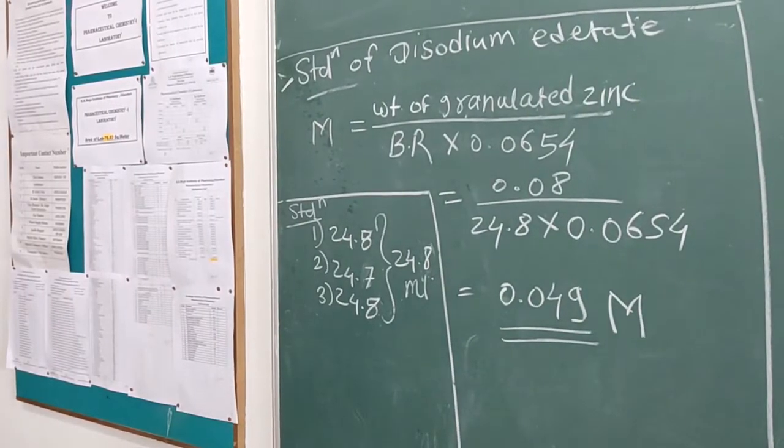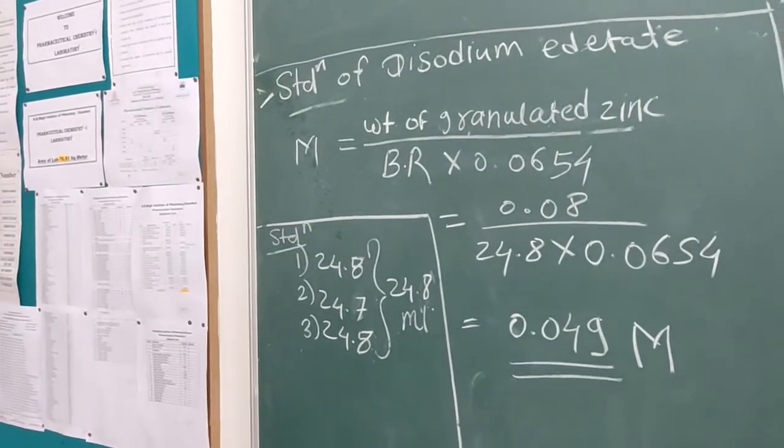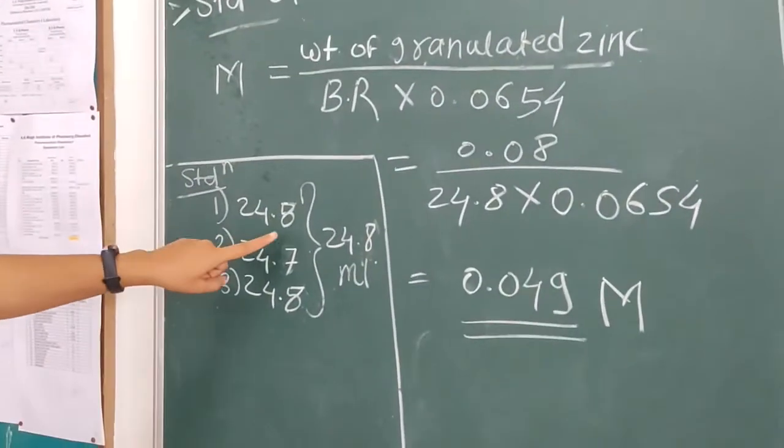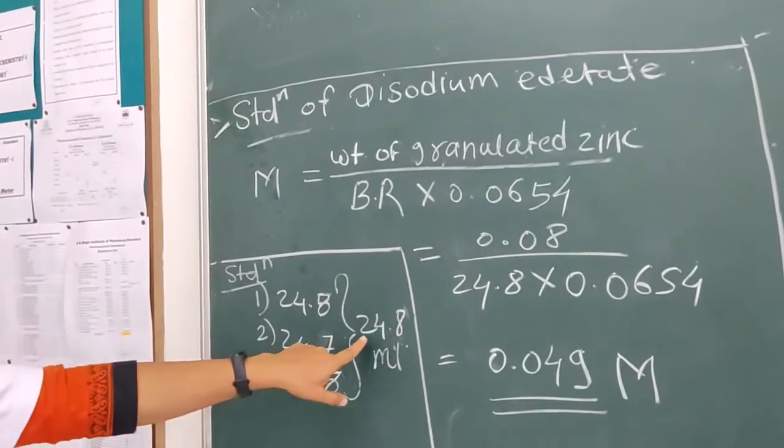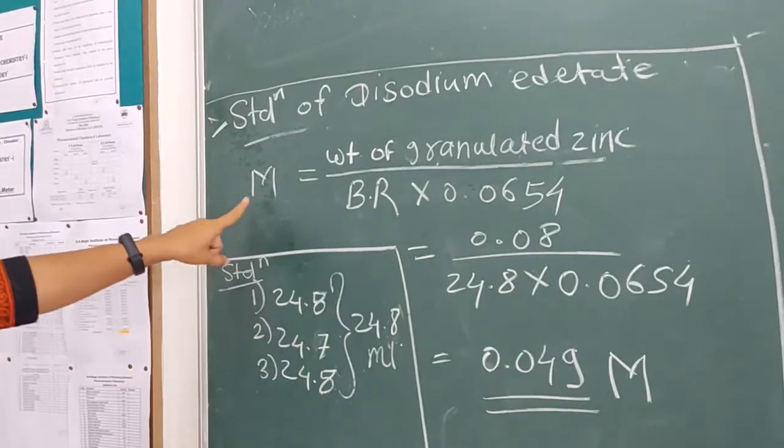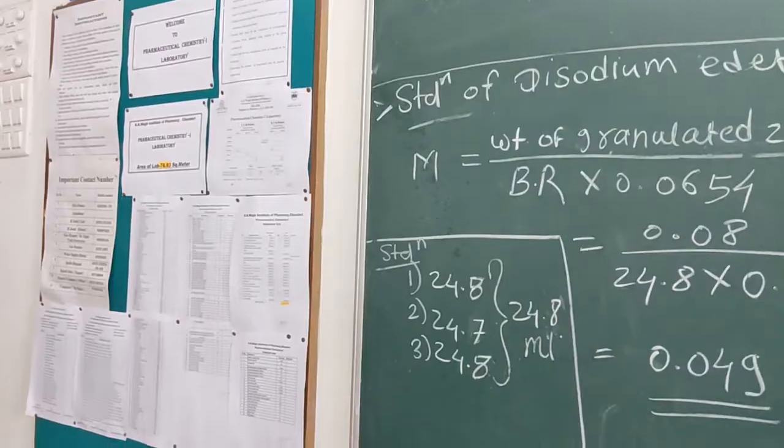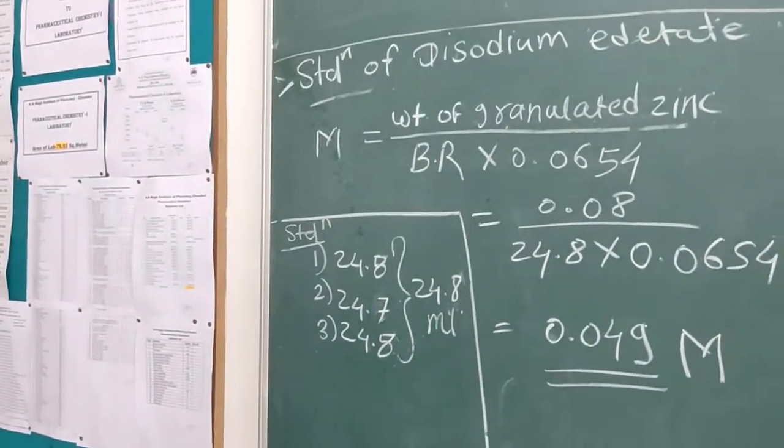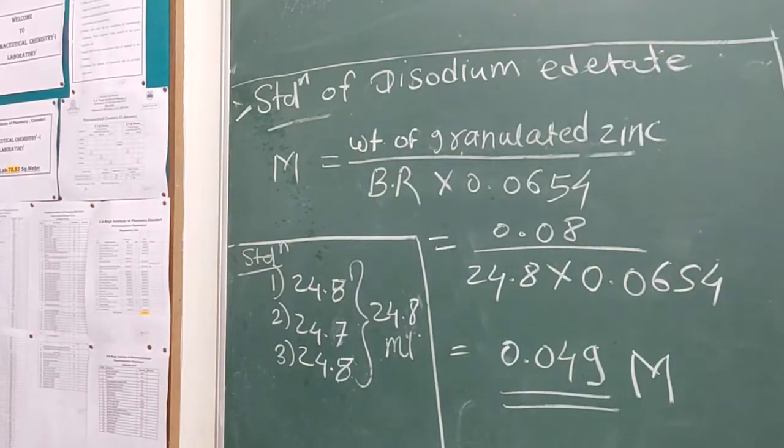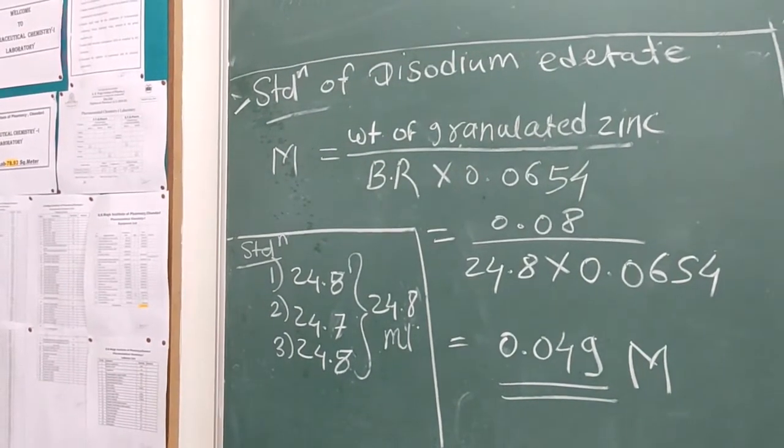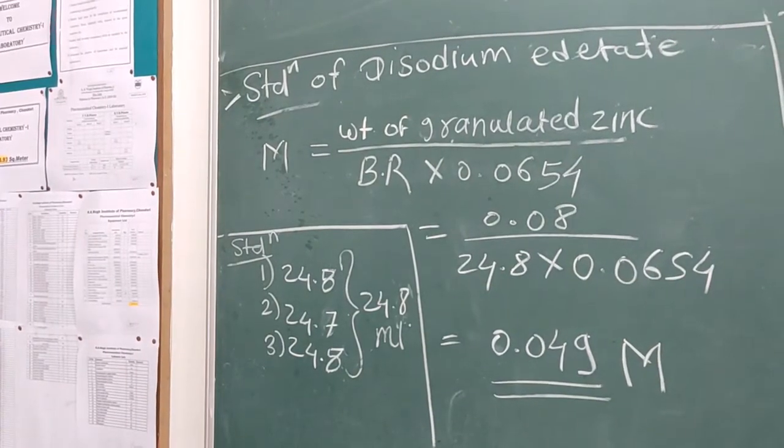Let's start with calculation for standardization of di-sodium EDTA. First of all, let's see reading. Burette reading for standardization: 24.8, 24.7, and 24.8, and the mean is 24.8. So, formula: molarity is equal to weight of granulated zinc divided by burette reading into 0.0654. Put the value into formula and reading and the molarity is 0.049 molar.